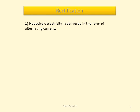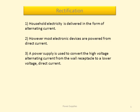Household electricity is delivered in the form of alternating current. However, most electronic devices are powered from direct current. A power supply is used to convert the high voltage alternating current from the wall receptacle to a lower voltage direct current.